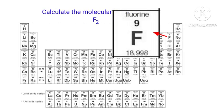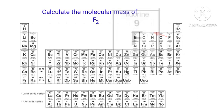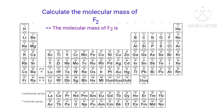The Atomic Mass of Fluorine is 18.998. In the F2 molecule, there are two Fluorine atoms present. So the Molecular Mass of F2 is 18.998 multiplied by 2, which equals 37.996 grams per mole.